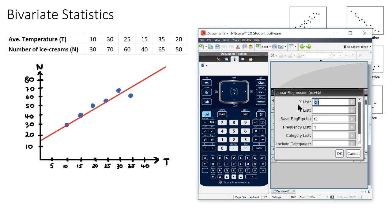So if we click on this, our x list stands for our x variable, which in this case is T, you might need to scroll down to find T, and our y list will be the N, the number of ice creams.